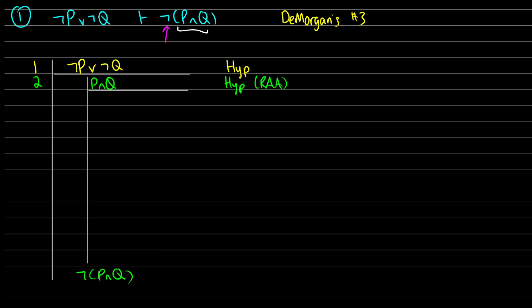Now I have P∧Q. I'm going to take P and Q out using AND elimination on line 2 to get lines 3 and 4, which are P and Q respectively. Now, it would be nice if using line 1 — ¬P∨¬Q — we can do OR elimination. If we can do OR elimination on this, then we can show that each disjunct leads to a contradiction, and we're in a good spot.